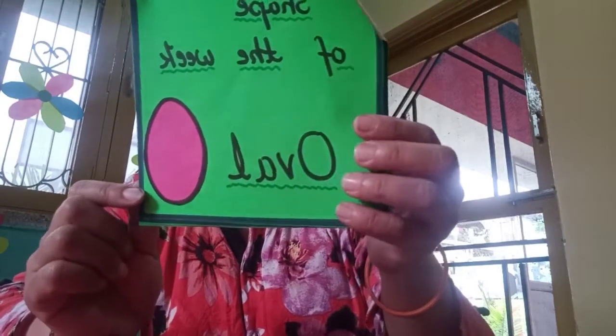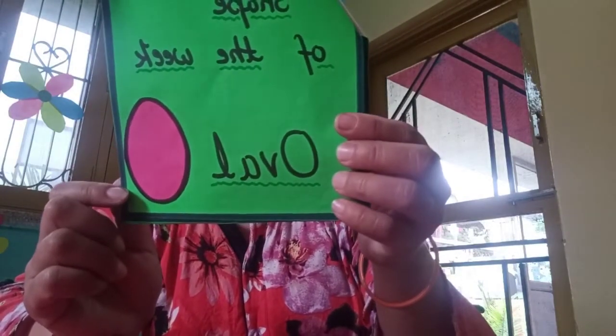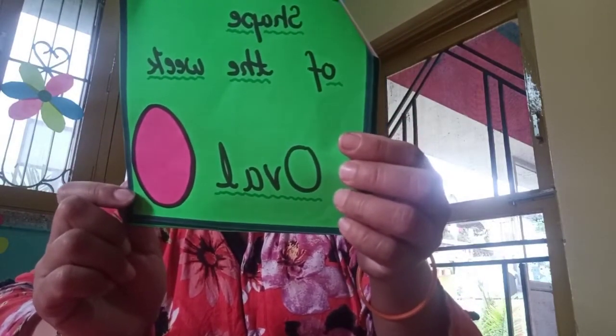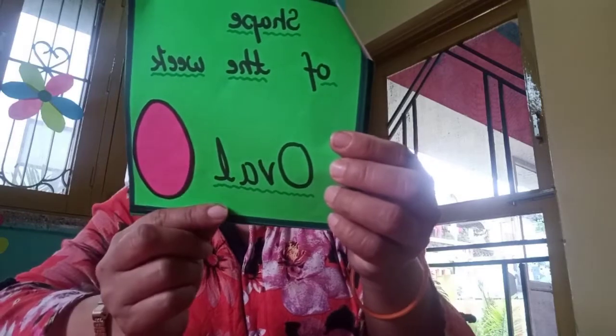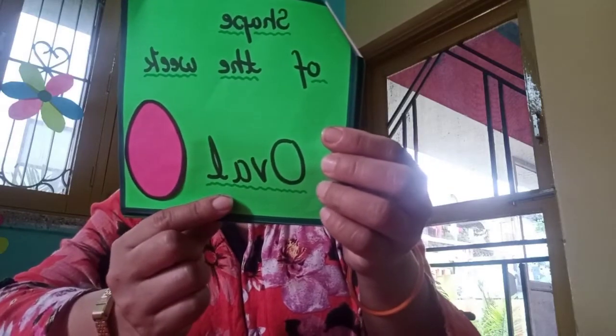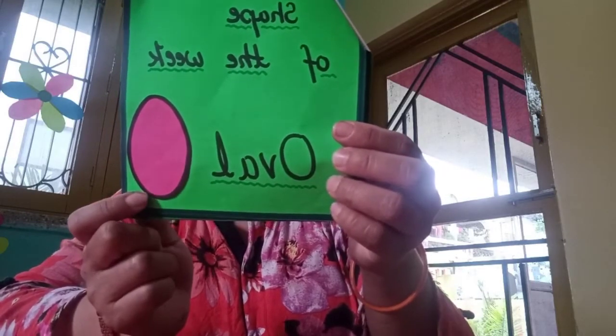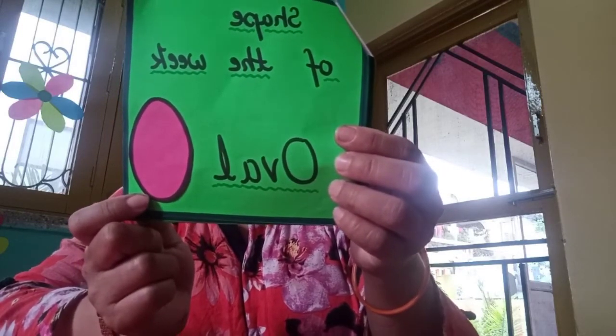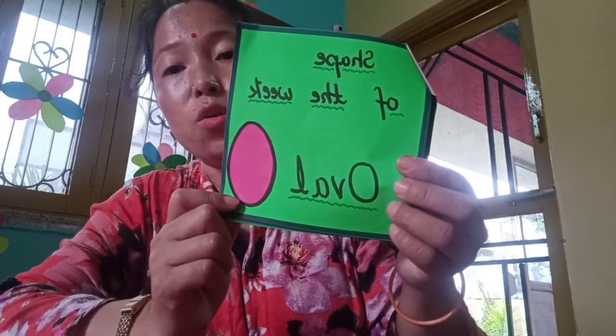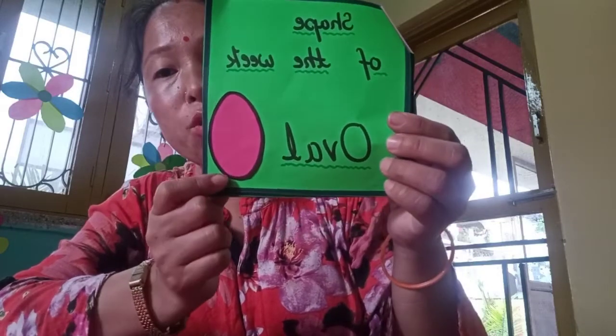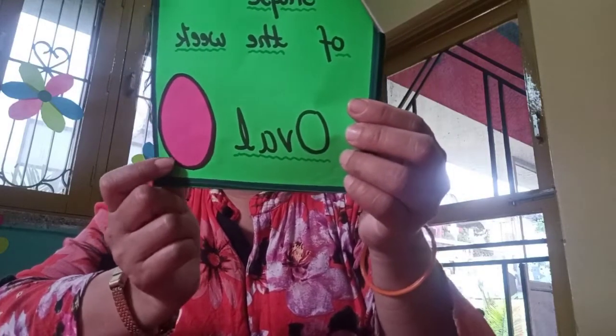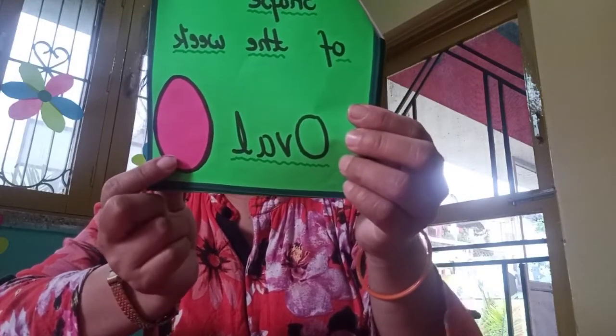Now, next one is — what is the shape of the week? Shape of the week is oval. O-V-A-L, oval. Shape of the week is oval. This is oval shape, like an egg. Egg ki shape hoti hai na? Oval. It's not a circle, it's oval.